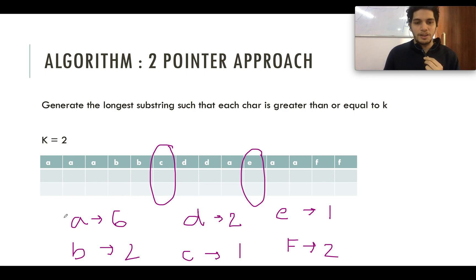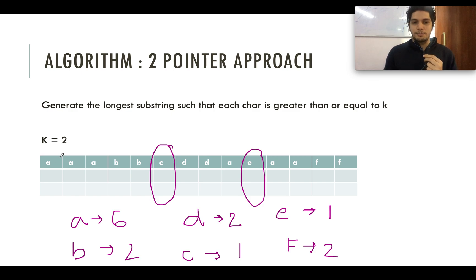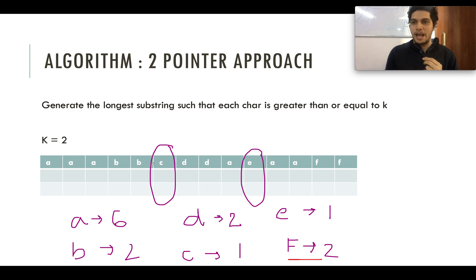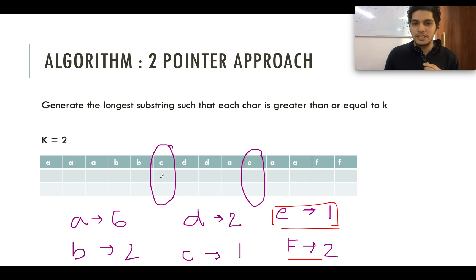First, we will store the frequency of each character in a map. We create a frequency map and iterate through the string to calculate the frequency of each character. Whenever the frequency of any character is less than K but greater than zero, that's the position of a split. For example, 'c' has frequency 1 and 'e' has frequency 1 — you can never generate a valid answer string that contains 'c' or 'e' in it.